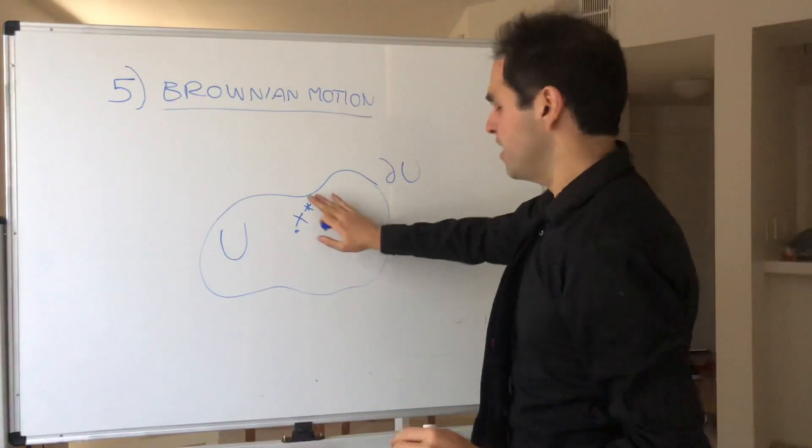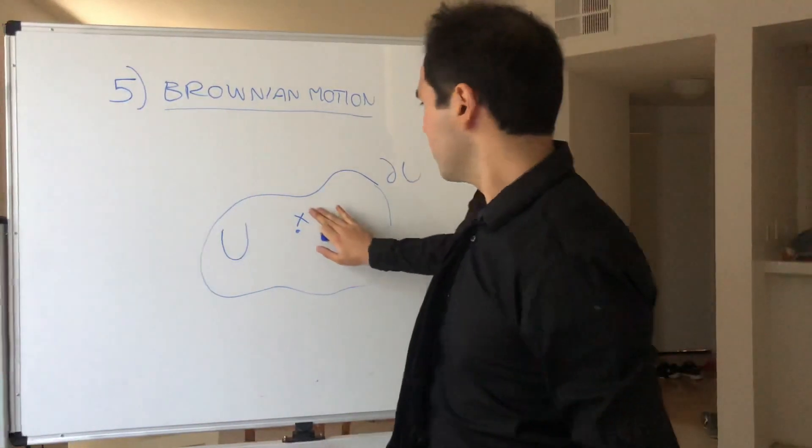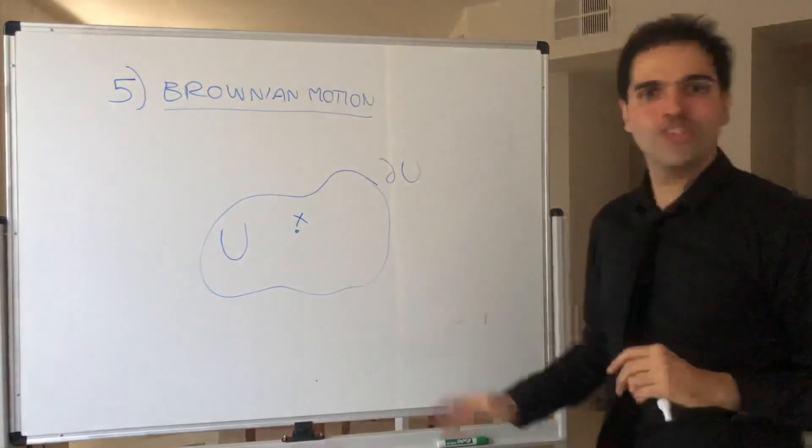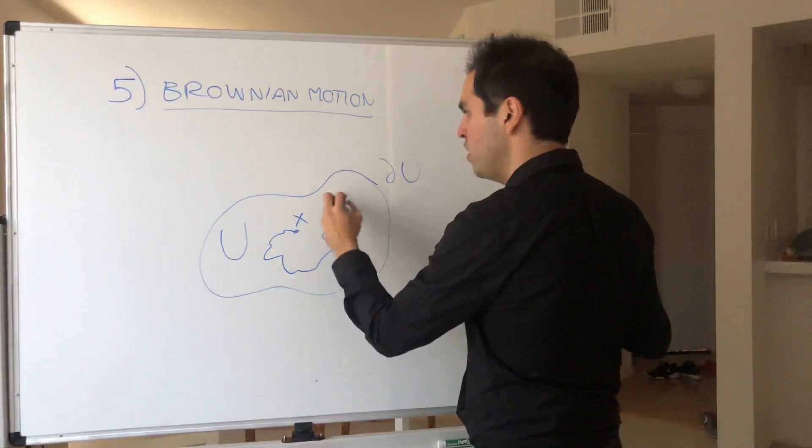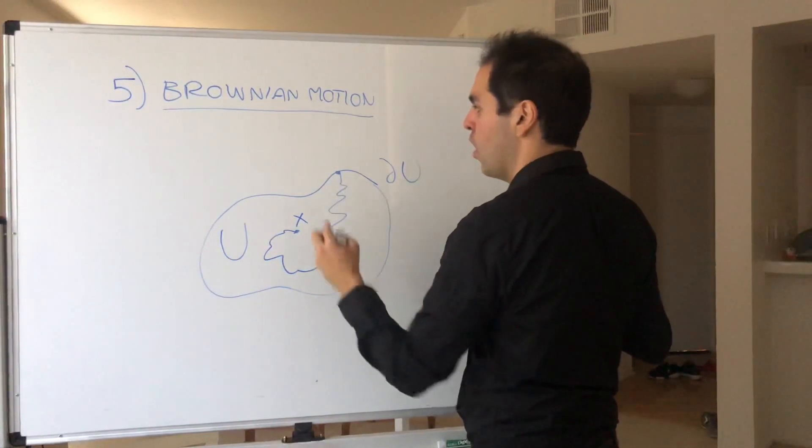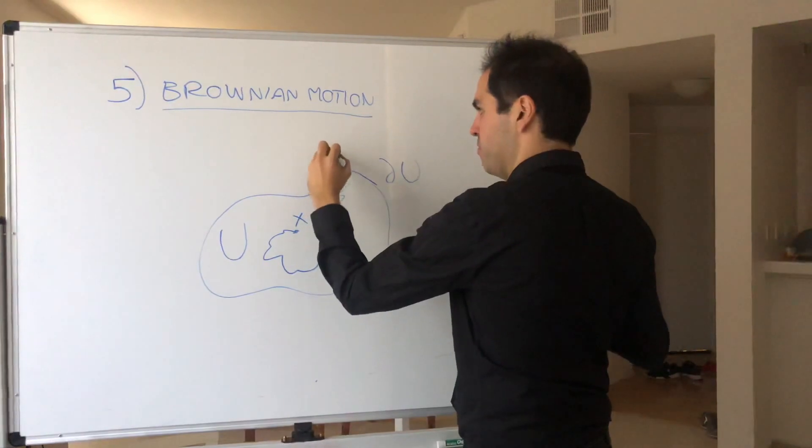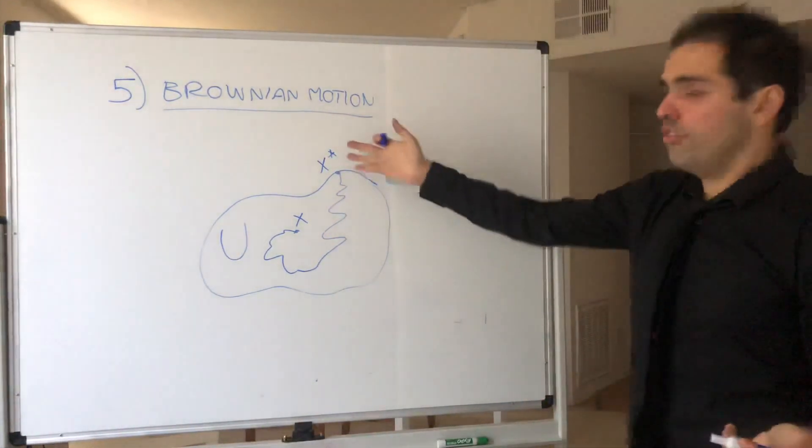You start at x. And then you party too much. So you had a little bit too much to drink. So you perform Brownian motion. So you do that until you hit the wall at a point x star.